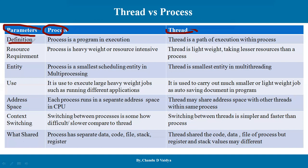The next difference is resource requirements. The process is heavyweight and resource intensive. The process of creating, determining, and maintaining resources requires more. It is a heavyweight task because the code section, data section, register section, and heap section will be separate, because the process is independent.